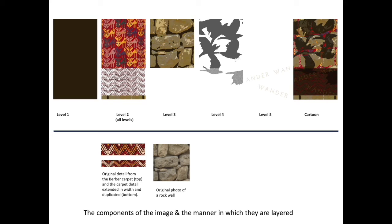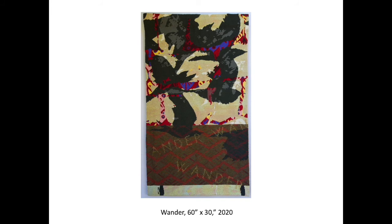Level three sits on top of the brocket deer in level two. It is a detail from a photograph of a rock wall modified in Photoshop with the cutout filter. The rock layer is set so that it bleeds through in the darker values, revealing the brocket deer in the cracks between the rocks. Level four is a collage of two different drawings of birds repeated at different angles. Level five is the word 'Wander,' set to dissolve into the layer beneath it — the Berber carpet detail and a little bit of the two sections of rock wall. The final cartoon shows all levels stacked on top of each other.